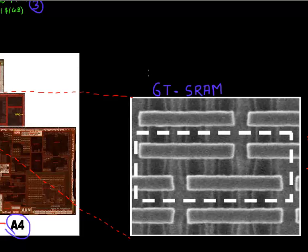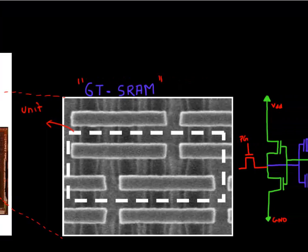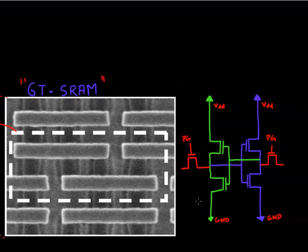Shown here is a six-transistor SRAM cell — this is one unit cell consisting of six transistors, and shown here is the circuit diagram for this cell. The SRAM cell consists of two inverters, one drawn in green and the other in blue, and they are cross-connected. Then you have two pass-gate transistors, which are used to essentially read the state of the cell.